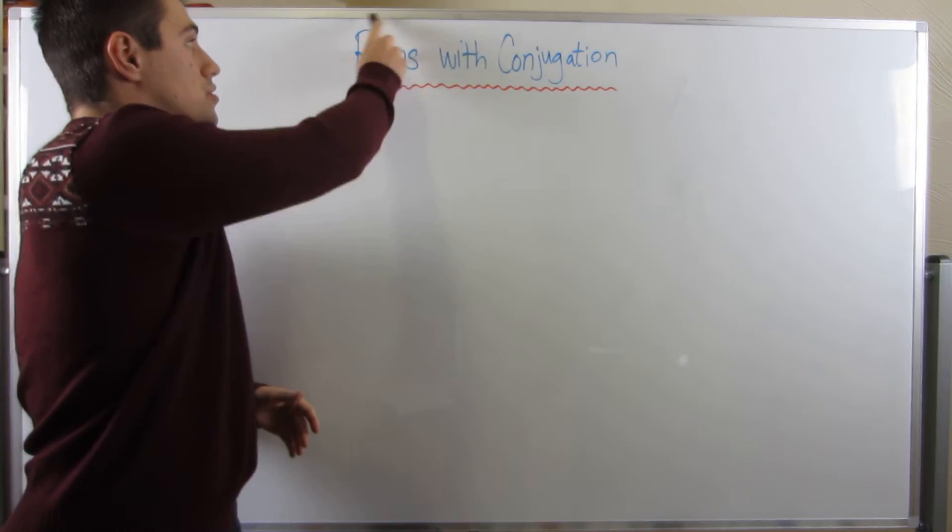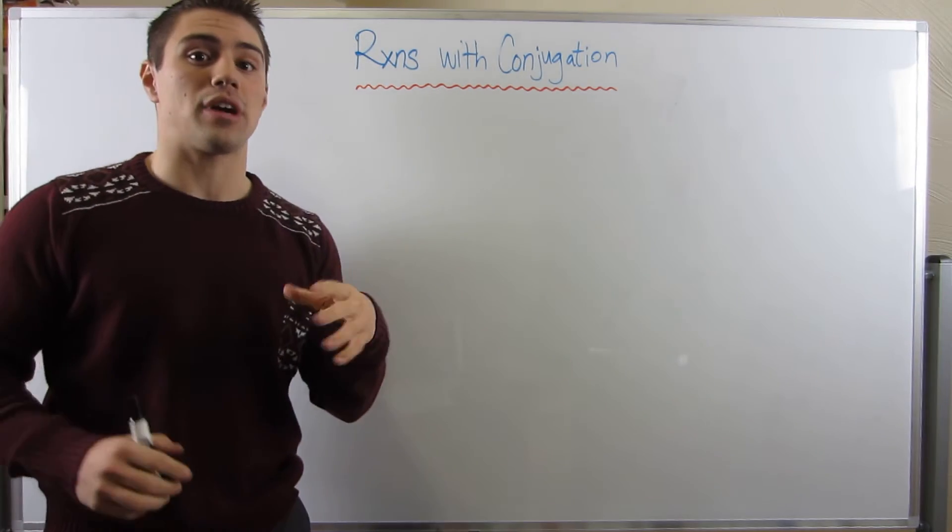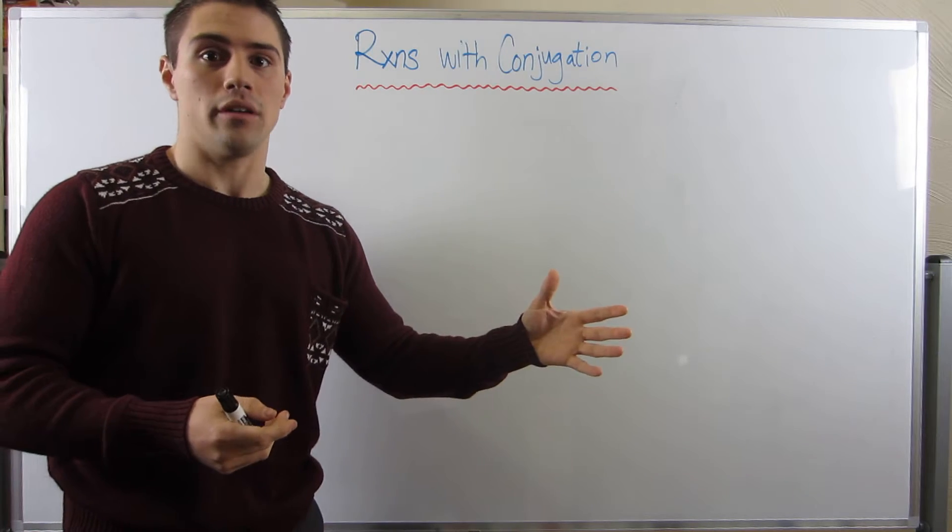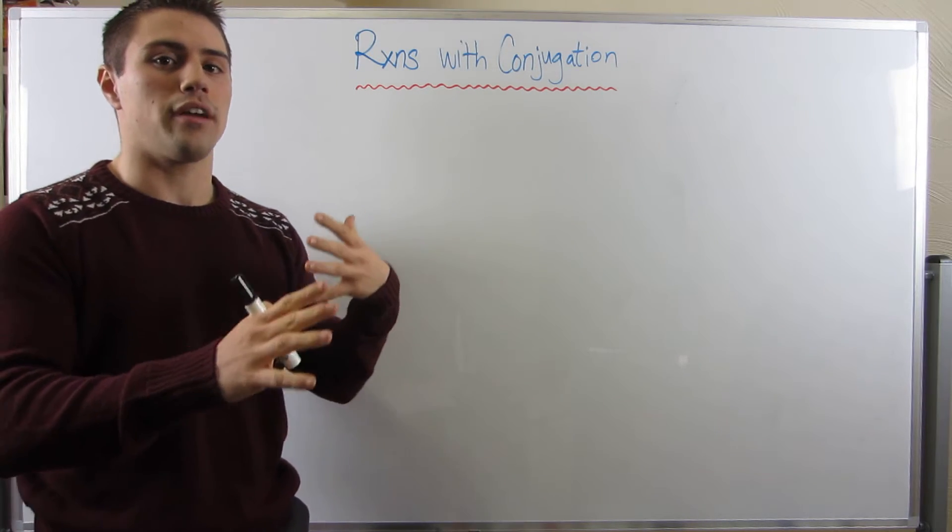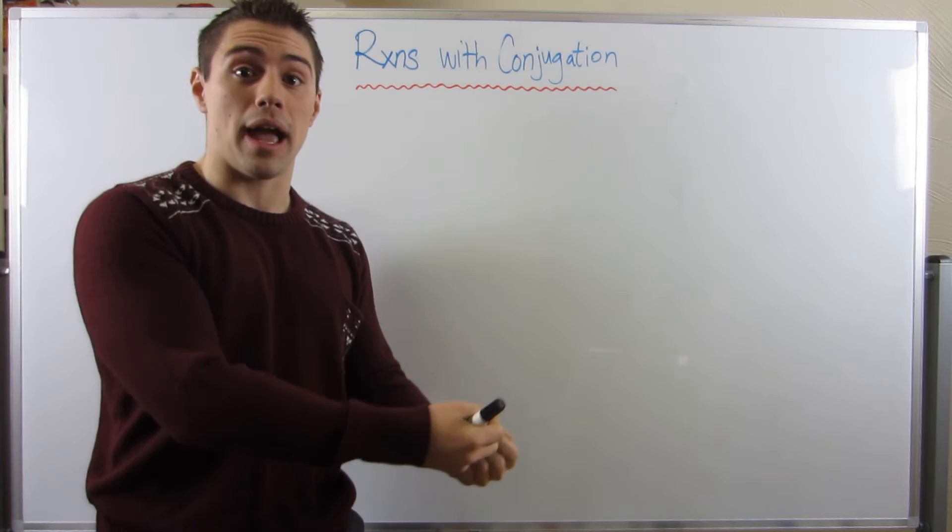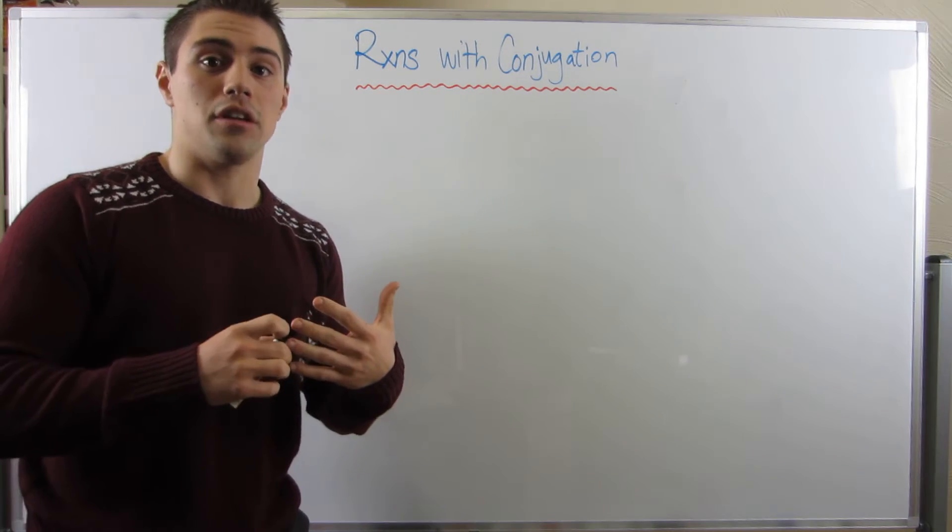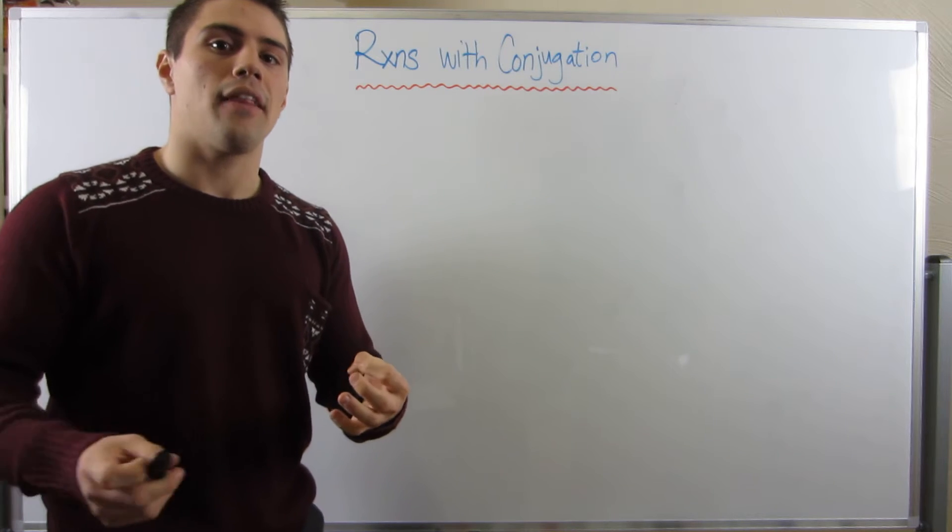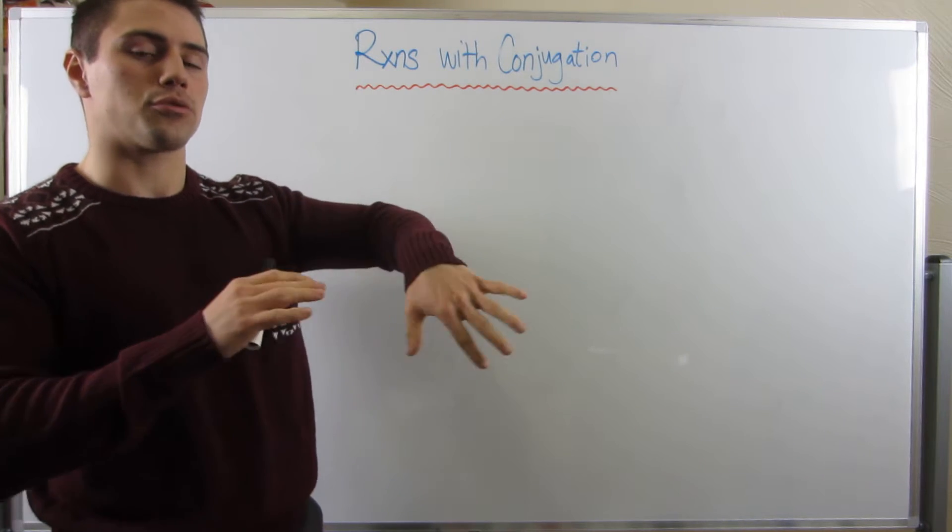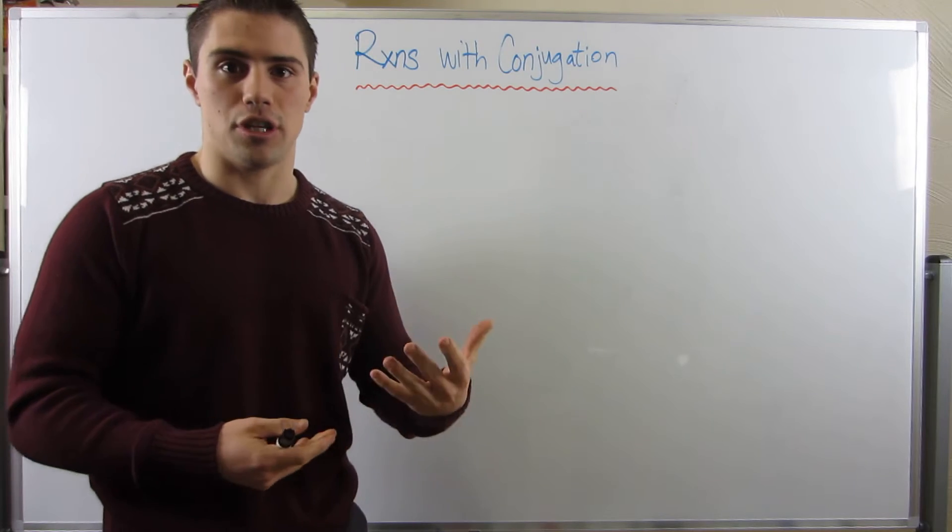Alrighty gang, so we're going to do some reactions. I'm going to do two examples of reactions we've done before from OCHEM1, see how they kind of change the array of products that we would normally expect. Before we even do that, I want to talk a little bit about different charge stability, and then leave you with a strategy at the end to how to handle conjugated systems.